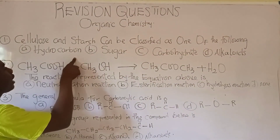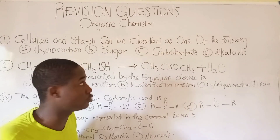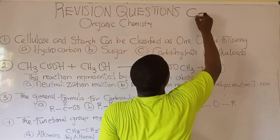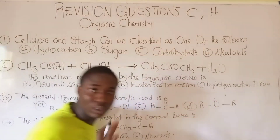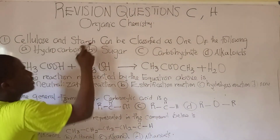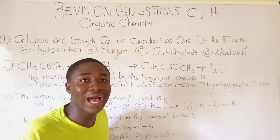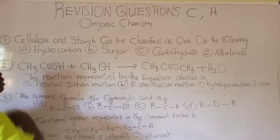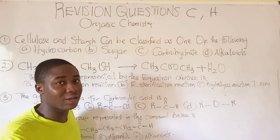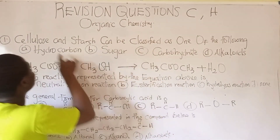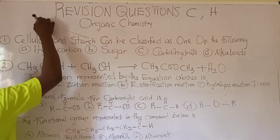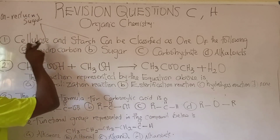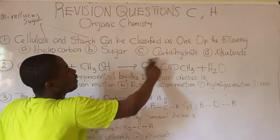For hydrocarbons, cellulose and starch are not hydrocarbons because hydrocarbons are compounds that contain carbon and hydrogen only. Looking at cellulose and starch, when we check the structure, we see other elements like oxygen. The smallest unit of carbohydrates are sugars, and it must be noted that cellulose and starch are formed from non-reducing sugars.